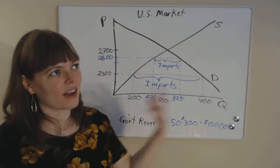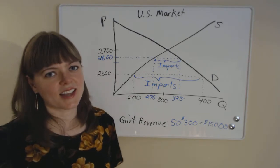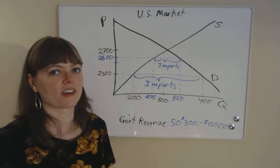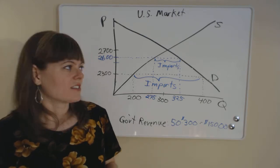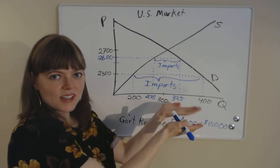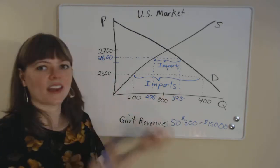and of course the other person who gains or the other agency that gains is the government. They get some money out of the deal. They get the $15,000 we calculated. So in sum, consumers lose, producers gain, and the government gains. And that's number four from the problem set.